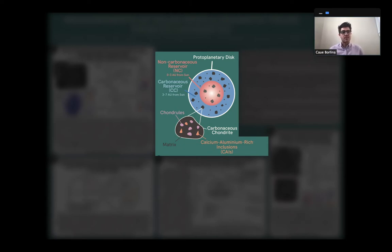So we have the CAIs, the calcium and aluminum rich inclusions, the very first solids to form in the solar system. You have the chondrules, which formed a few million years later. And then finally, we have the matrix, which clumps it all together into one main sample.